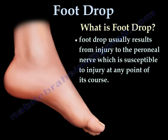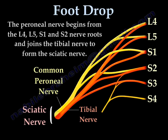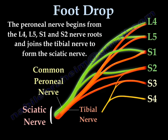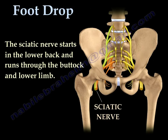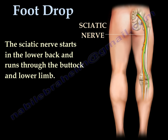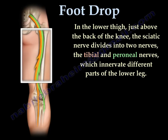The foot drop usually results from an injury to the perineal nerve, which is susceptible to injury at any point of its course. The perineal nerve comes from the lumbosacral plexus — it comes from L4, L5, S1, and S2 — and joins with the tibial nerve to make the sciatic nerve. The common perineal nerve is the one that gets injured, causing foot drop. The sciatic nerve starts as nerve roots in the lower back, runs through the buttock and lower limb in the back of the thigh, and just above the knee divides into the common perineal nerve and the tibial nerve.